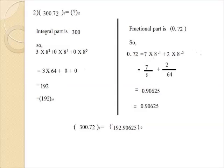Here is another question: 300.72 to the base 8 is the octal number. The integral part is 300 and the fractional part is 0.72. For the integral part, with three digits: 3 into 8 raise to 2, plus 0 into 8 raise to 1, plus 0 into 8 raise to 0 gives 3 into 64, which is 192. The remaining terms are 0, so 192 is the corresponding decimal for 300.